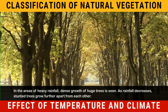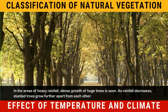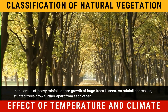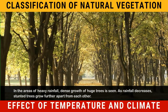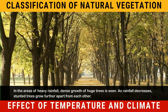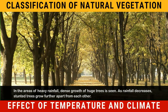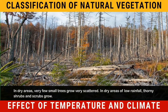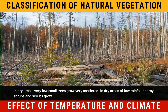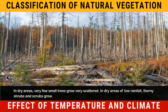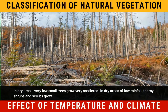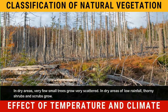In areas of heavy rainfall, dense growth of huge trees is seen. As rainfall decreases, stunted trees grow further apart from each other. In dry areas, very few small trees grow very scattered. In dry areas of low rainfall, thorny shrubs and scrubs grow.